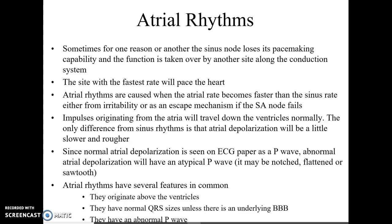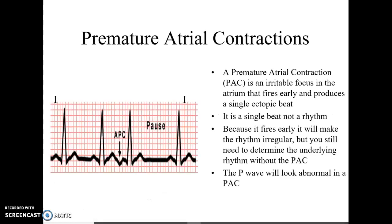We'll start looking at our PACs. A PAC is a premature atrial contraction — it's an irritable focus in the atrium that fires early, and it produces a single ectopic beat. Ectopic means coming from outside the normal focus. It is a single beat, not a rhythm, so we're still going to have to determine the underlying rhythm. We would have a sinus rhythm with a PAC, or a sinus brady with a PAC. Because it fires early, it is going to make the underlying rhythm irregular, but you still need to determine the underlying rhythm.